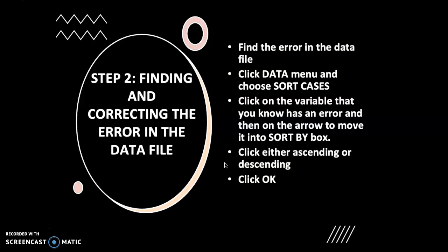Finding and correcting the error in data file. So what you need to do in finding and correcting the error is that find the error in the data file. How to do that? Click data on the menu bar and choose sort cases. Click on the variable that you know has an error. In this case, we have identified gender as an error where we wrongly key in value of three. So we click on gender and then on the arrow to move it into sort by. So we need to sort by. So click either ascending or descending. So you can either sort from small number to large number or from large number to small number. And then you click OK.